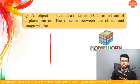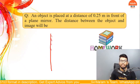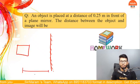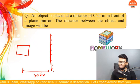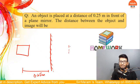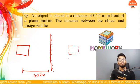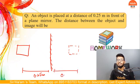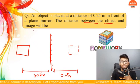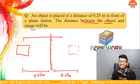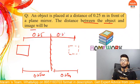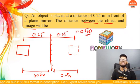So it's very simple guys. Imagine this is the object, this is the mirror, and there is an object kept right in front of it — let's say it's a box — and this box is at a distance of 0.25 meters. The image will also be formed exactly at 0.25 meters, because it's a plane mirror. So object distance and image distance will be exactly the same. The distance between the object and the image is 0.25 plus 0.25, which makes it 0.5 meters.